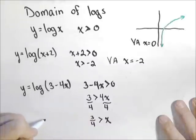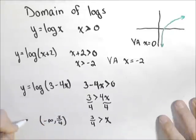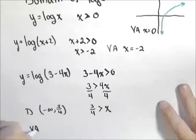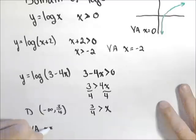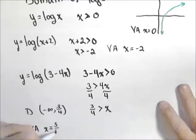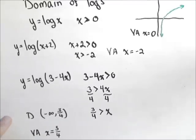...we get that x has to be less than three-fourths. In interval notation, that would be negative infinity to three-fourths, not including three-fourths. Our vertical asymptote is at the point that makes the argument zero, so in this case the vertical asymptote is at x equals three-fourths.